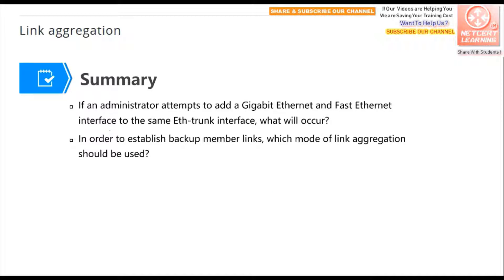Now, two review questions. First: if an administrator attempts to add a gigabit Ethernet interface and a fast Ethernet interface to the same Ethernet trunk, what happens? As discussed, links in the same link aggregation group must have the same speed and duplex mode. Putting two interfaces with different speeds into one group will fail — an error message will appear stating that you cannot put different-speed interfaces into one link aggregation group.